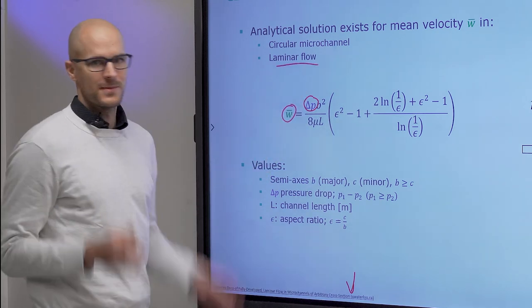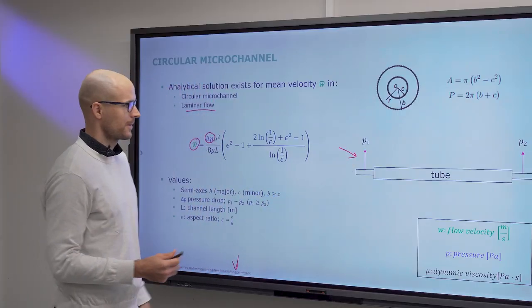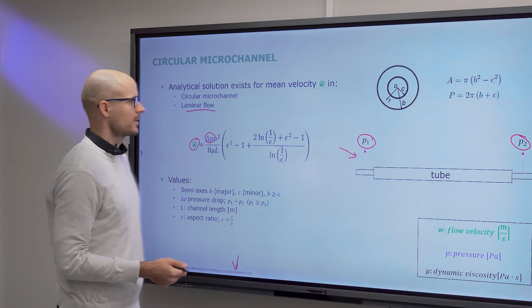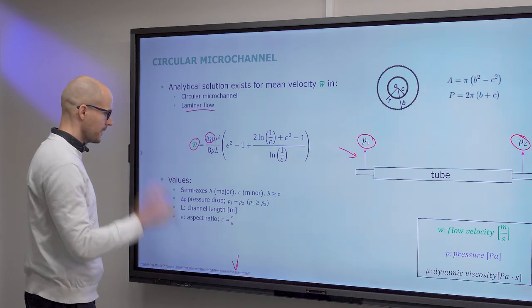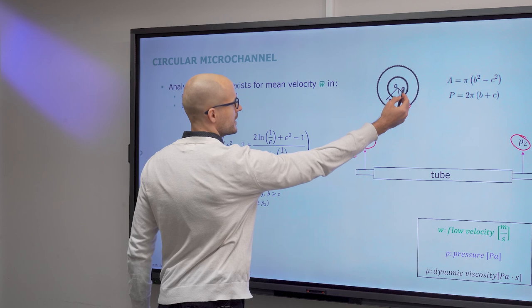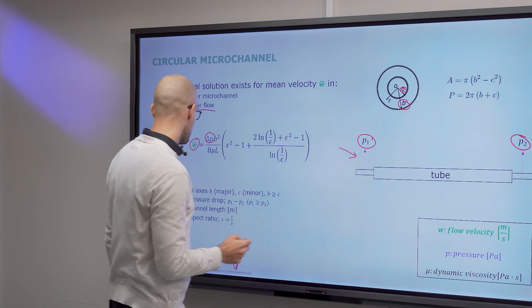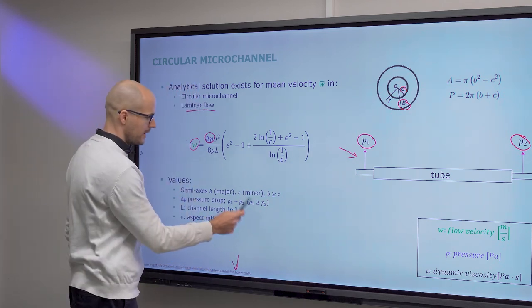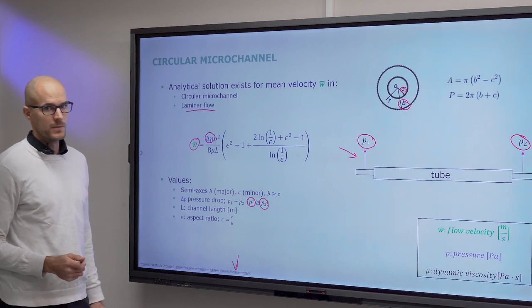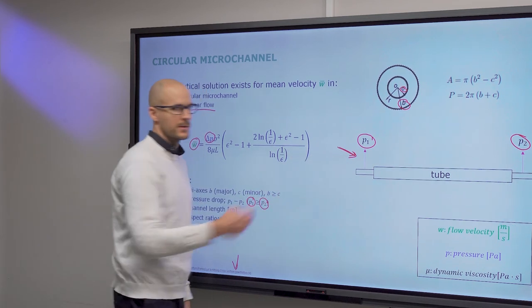And this is a laminar flow that has to be stated. So here we have our tube with circular cross section. If you measure the pressure before and after this tube, then you can do your calculation. And what you also need for this are three parameters. So semi-axes B and C, major and minor semi-axis. And of course the pressure drop, where the inlet pressure must be at least equal to the outlet pressure, but should be typically higher. So this is valid for situations where you have pumping.